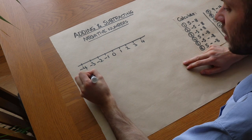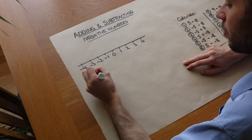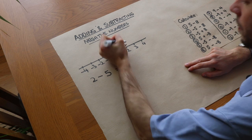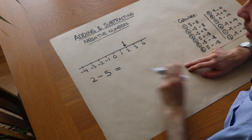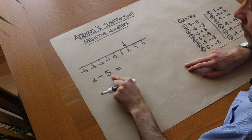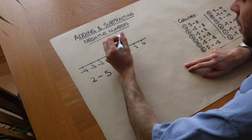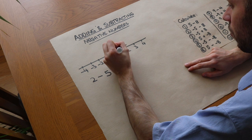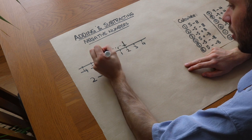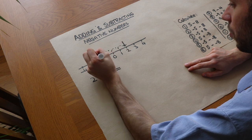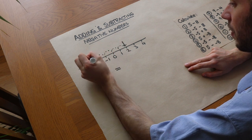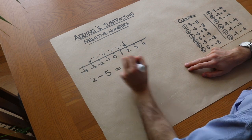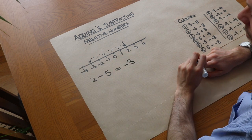For example, if I said two minus five, I can start at the two and then I'm moving five positions down. When you subtract five you're going five positions down the number line — one, two, three, four, five — and we can see we're now at negative three, or minus three.